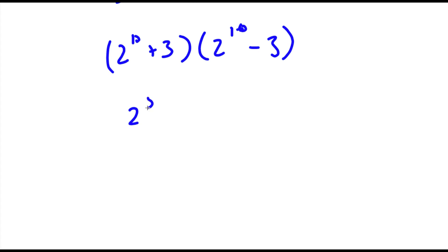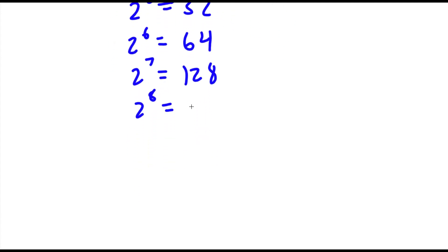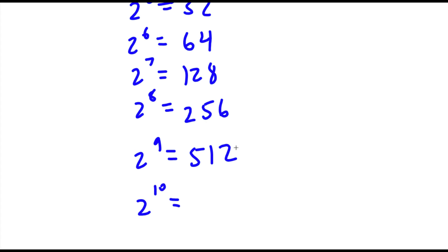Now, 2 to the power of 5 is equal to 32. 2 to the power of 6 is double that, which is 64. 2 to the power of 7 is double 64, which is 128. 2 to the power of 8 is double 128, which is 256. 2 to the power of 9 is double 256, which is 512. And finally, 2 to the power of 10 is double 512, which is 1,024.